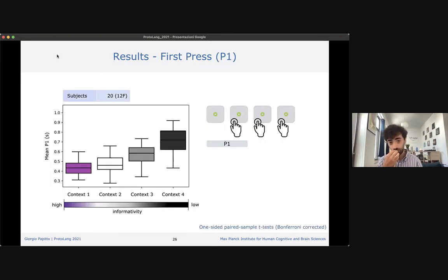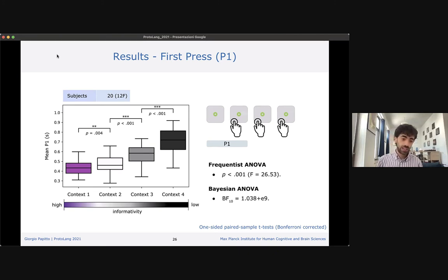Now I present the results from 20 subjects who completed the experiment. Here we look at the results for the first press, the time participants needed to start the tapping movement. On the y-axis I report the time and on the x-axis the context level. We ran a frequentist ANOVA and observe that there is a main effect of informativity. To check whether there is a step-by-step increase across conditions, we ran three one-sided post-hoc comparisons. Here I report Bonferroni corrected values. As you can see from the plot, there is a significant increase in the time participants need to start the tapping sequence from one level to the other of this context informativity hierarchy, exactly as expected. We also ran a Bayesian ANOVA to confirm the results of the frequentist ANOVA, which also strongly supports our hypothesis.